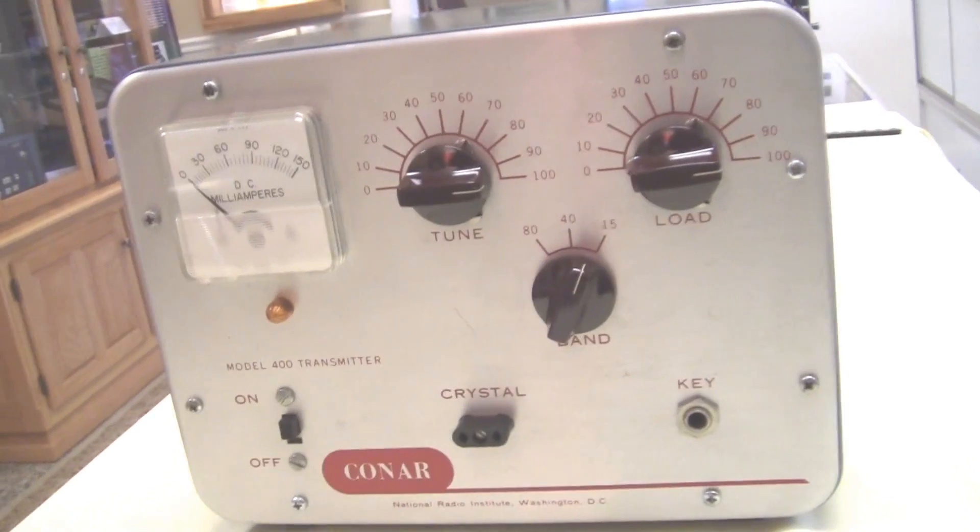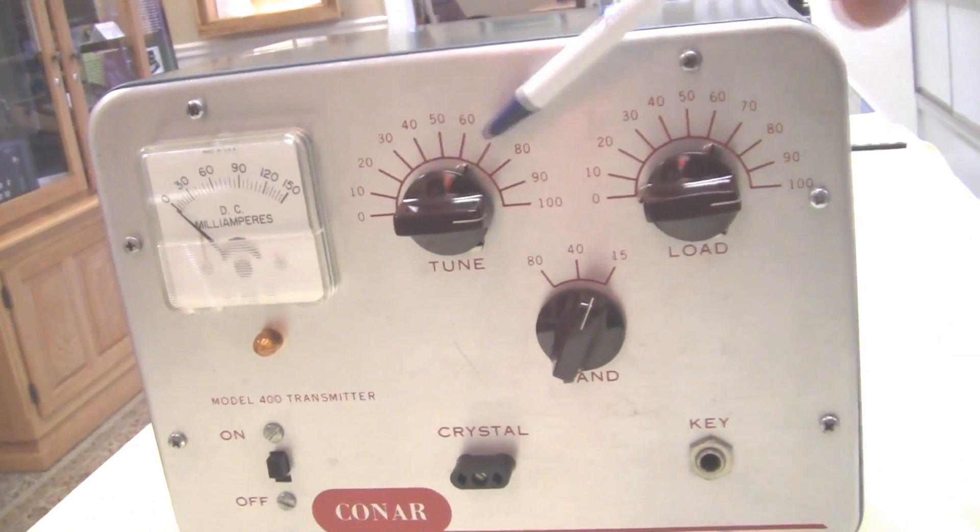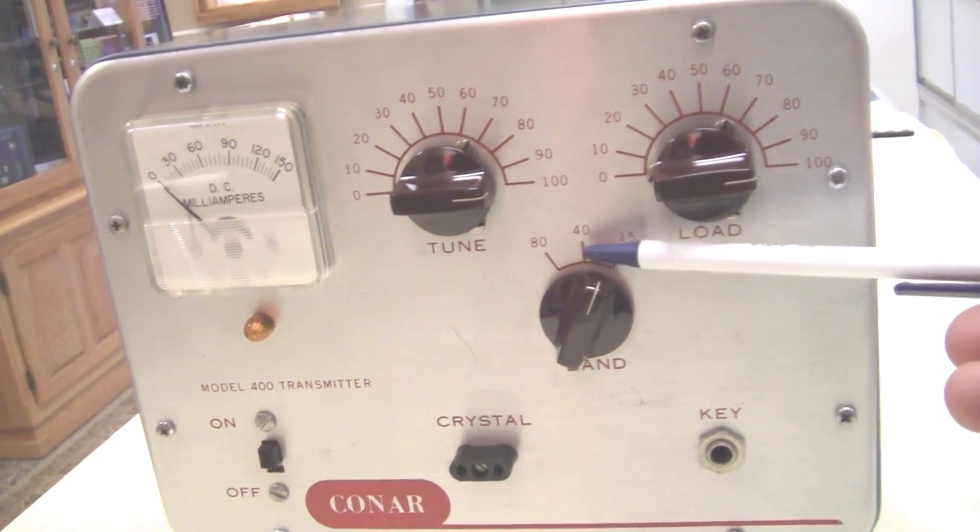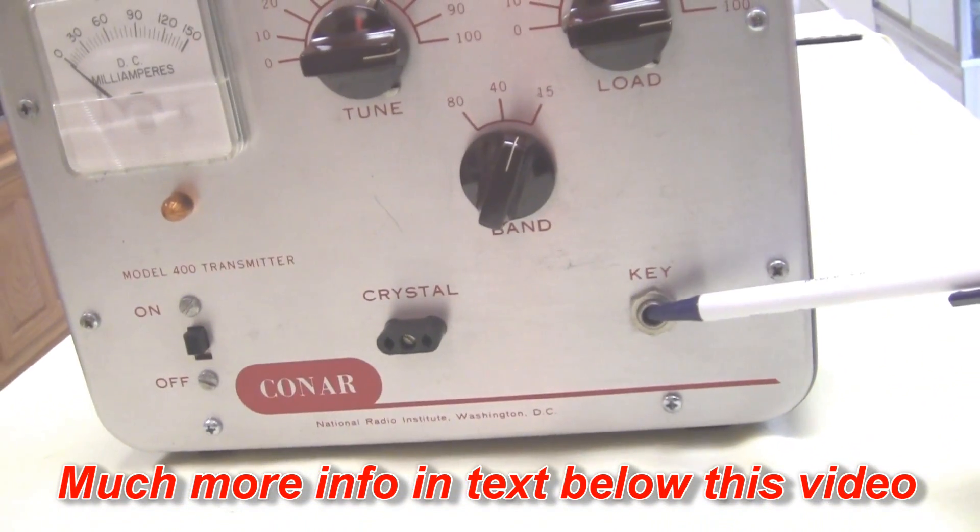So let's take a look inside the Conair 400 CW transmitter. Just to give you a little close-up of the controls on the Conair transmitter. Of course, here's the two capacitors for tuning the Pi network. Here's the band switch for 15, 40, and 20 meters.